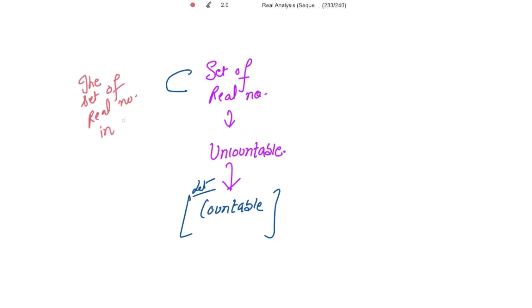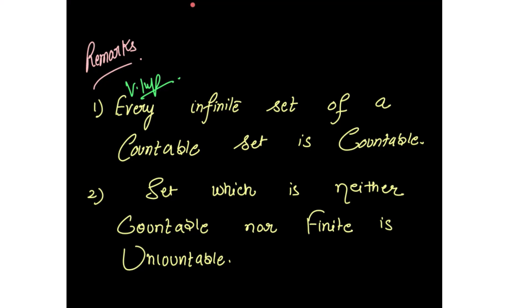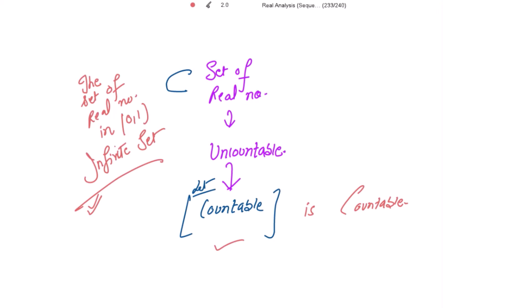I'm taking the set of real numbers in the open interval (0,1). There are infinitely many real numbers in this open interval, so it is an infinite set and it is a subset of the set of real numbers. The result says every infinite subset of a countable set is countable, so this infinite set would also be countable.